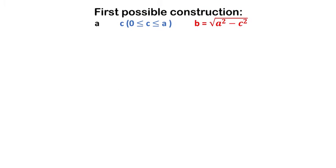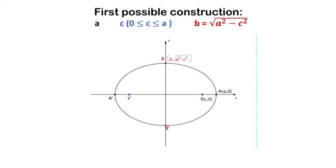Here is the first possible construction where a is fixed, you fix what number you want, c is my parameter, this distance, and b is constrained by this condition to construct this point.